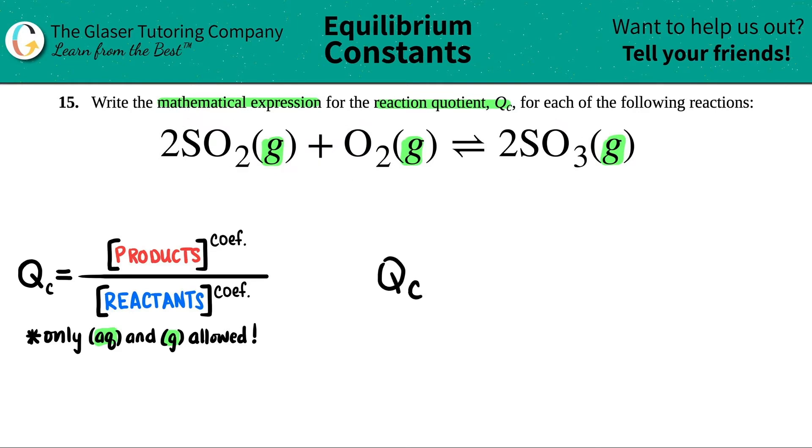So let's get it started. QC equals something divided by something else, right? So let's start with the products. Now, these brackets just mean concentration, aka molarity. And that's what the C is too. The C says that we're taking concentrations, aka molarities.